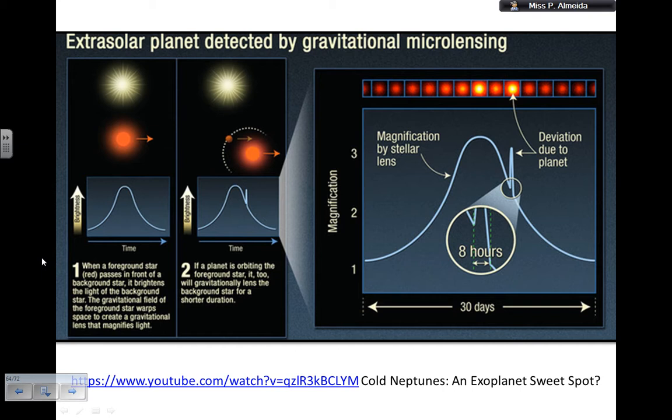So this happens already and Einstein told us about it, in terms of the bending of space and time. Now, what happens if the star that is passing through the background star, the foreground star, what happens if that star has a planet?